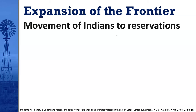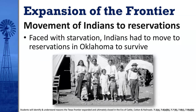Because of the disappearance of the buffalo, the Indians were forced to move to reservations — government land set aside for the Native Americans who were relocated from where they had lived. Faced with starvation, Indians from Texas had to move to reservations in Oklahoma to survive. Unfortunately, when they did that, they sort of lost their identity as self-sufficient Native Americans who roamed the plains. They became dependent on the food, clothing, and housing supplied by the U.S. government, and lost that cultural identity.